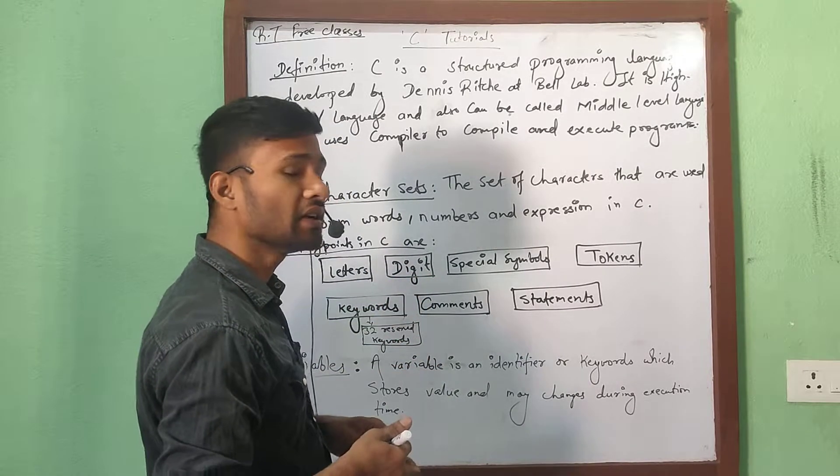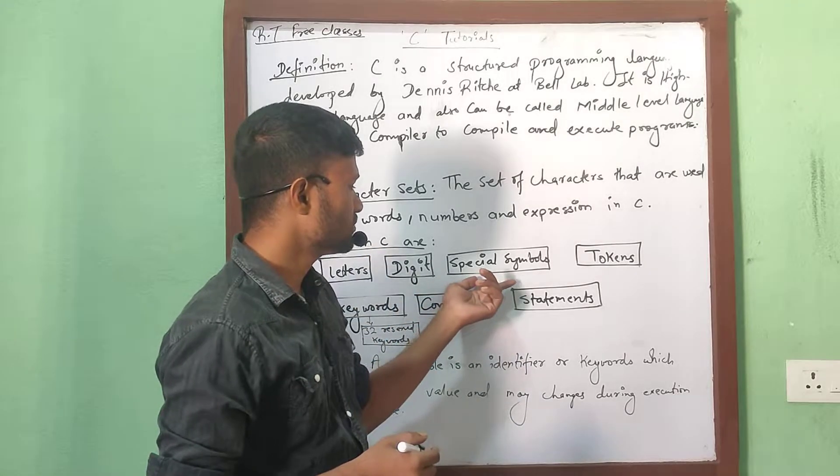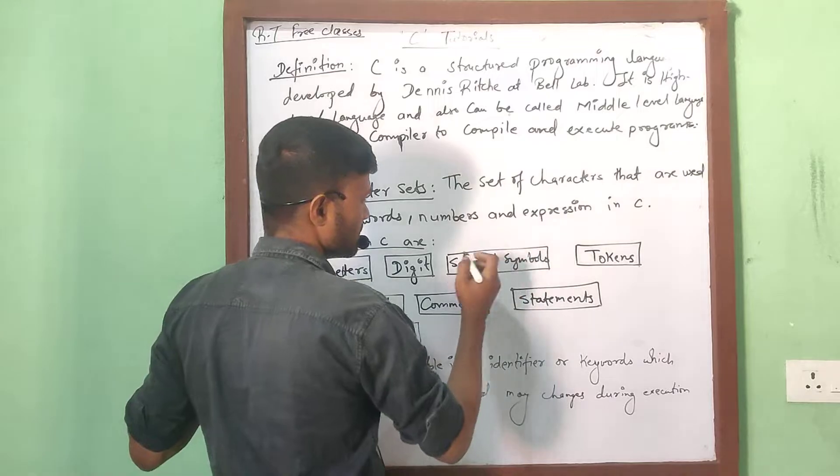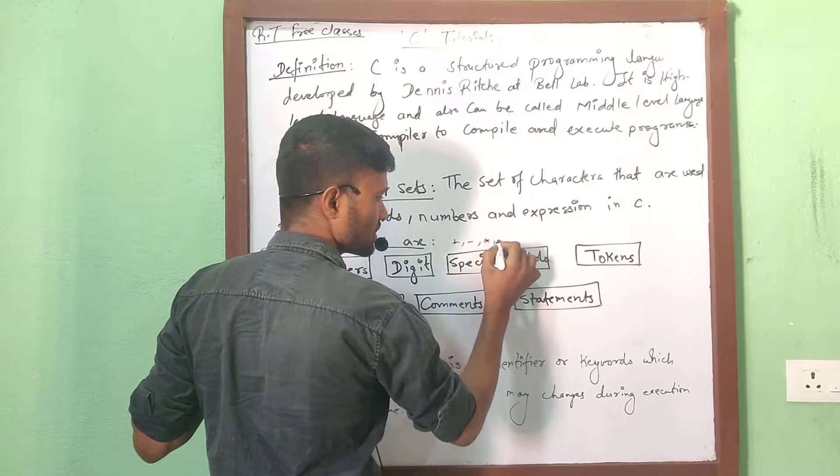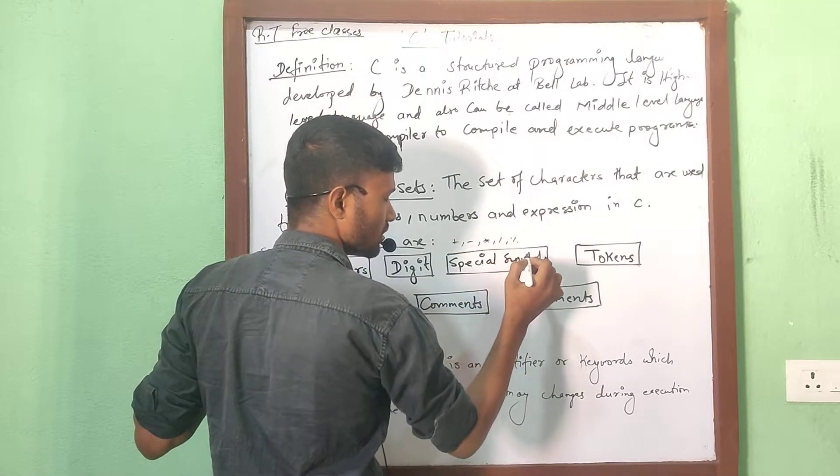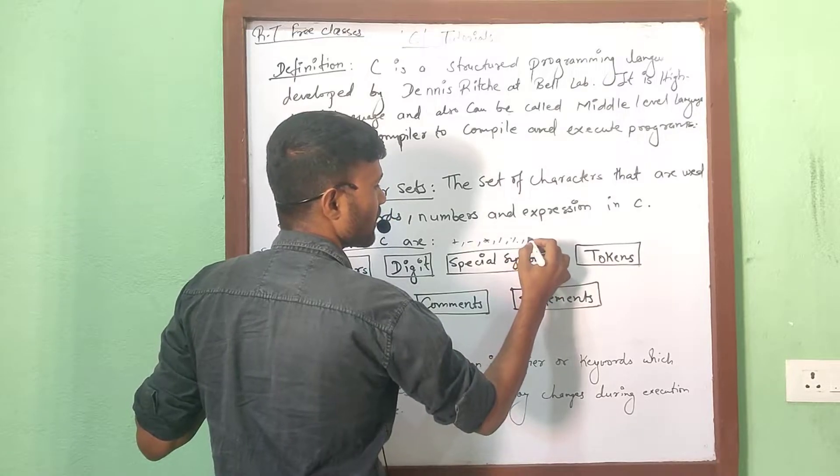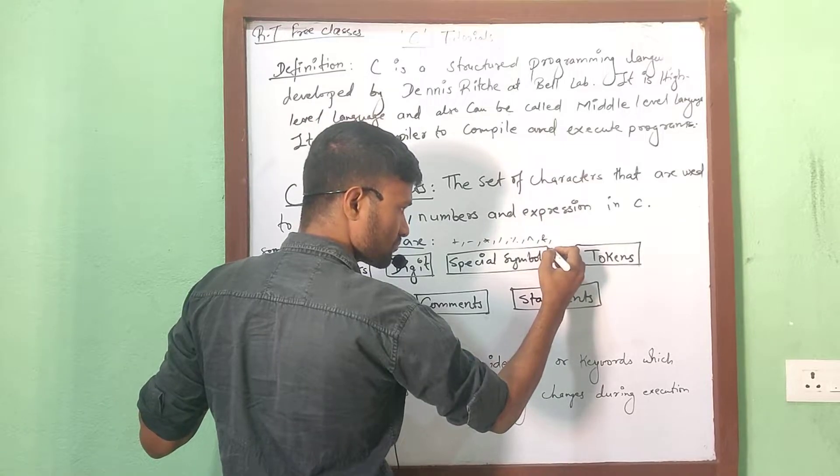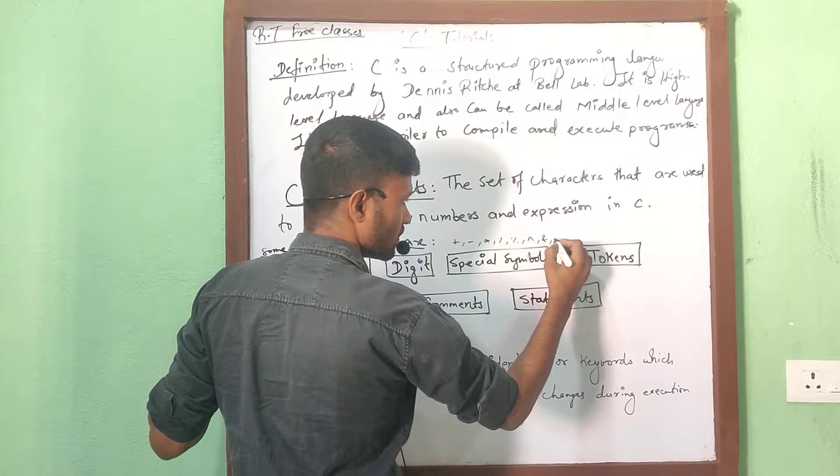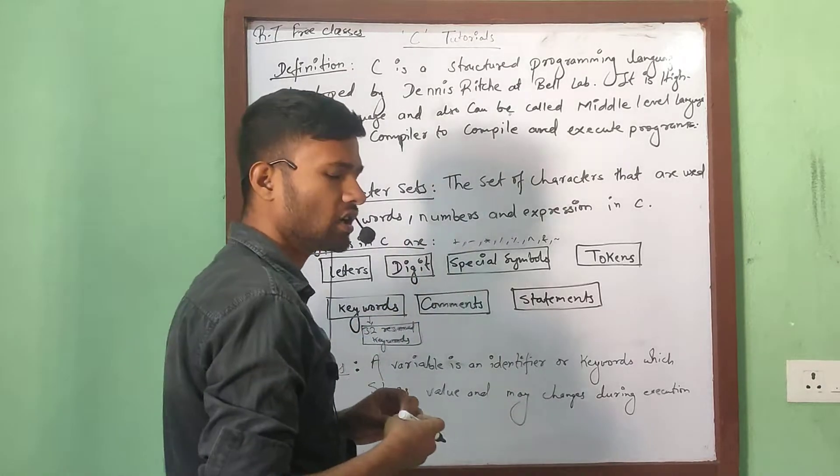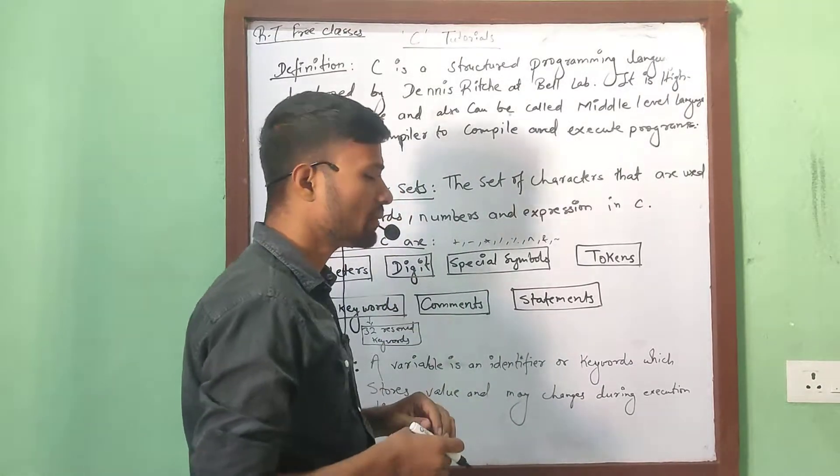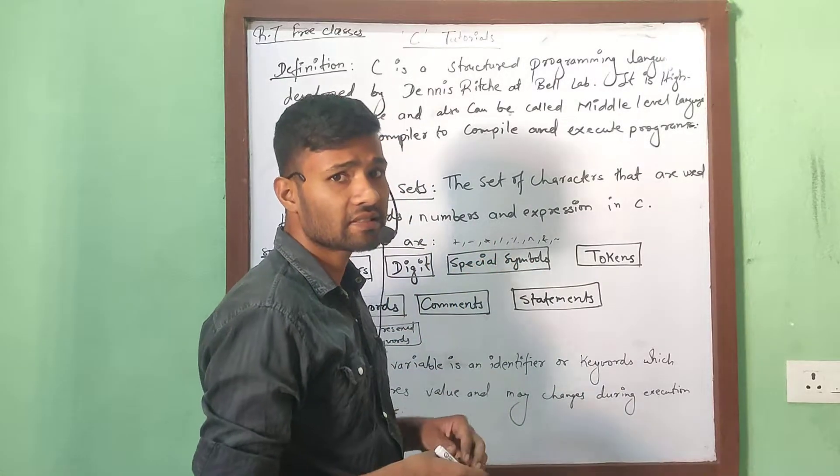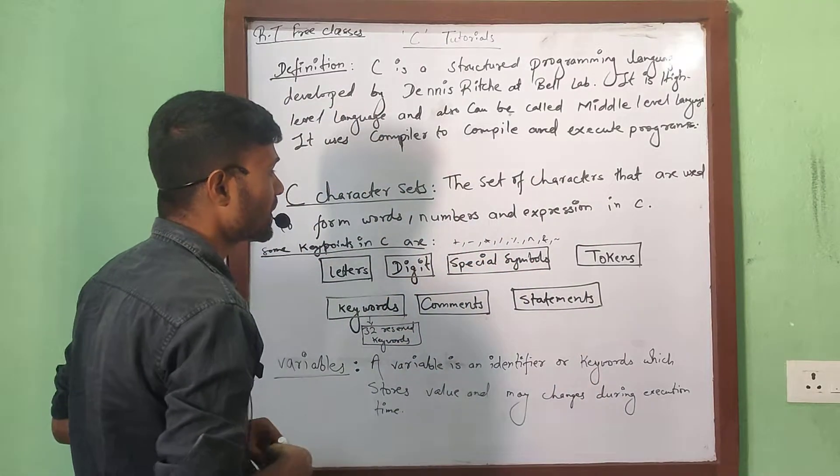Digits is nothing like zero to nine numbers. One more thing, special symbols. In special symbols, what may be there? It may be plus, minus, multiplication, division, percentage, exponential signs, and percent, and tilde. Like this, we will get lots of symbols in C programming language. Next video also, we will see all the symbol details, names, and its functions.